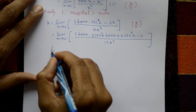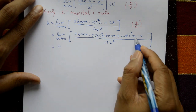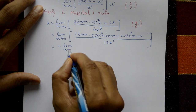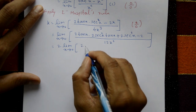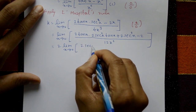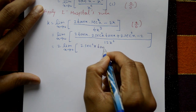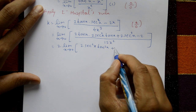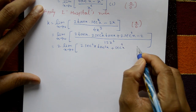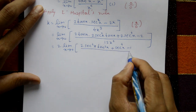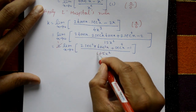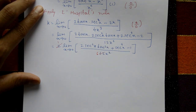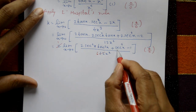Taking 2 common from numerator: limit x tends to 0 of 2 times (sec²x·tan²x + sec⁴x minus 1) divided by 12x², which simplifies to (sec²x·tan²x + sec⁴x minus 1) divided by 6x².